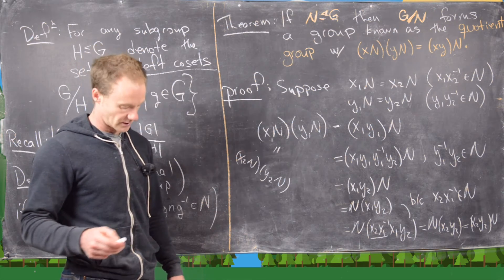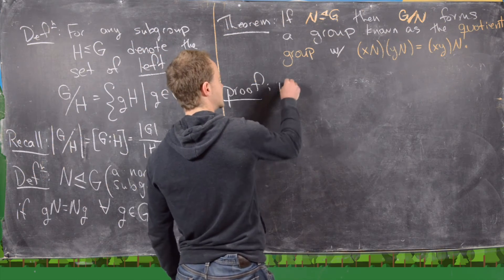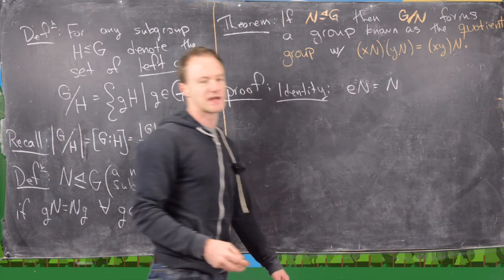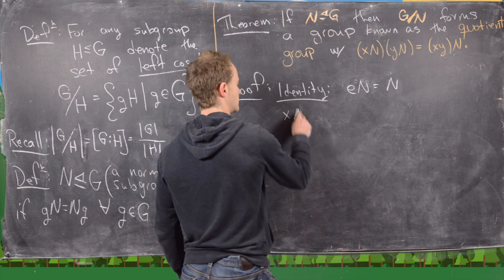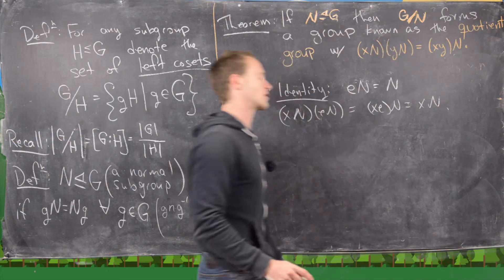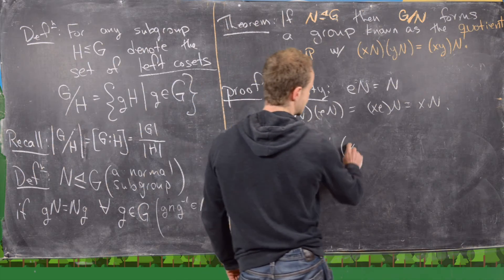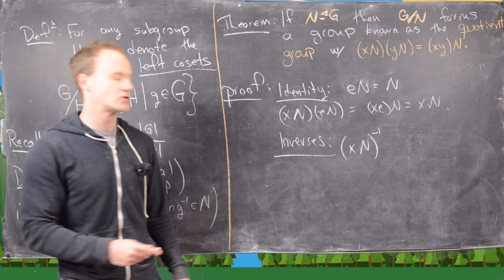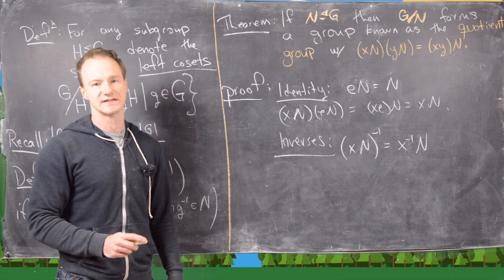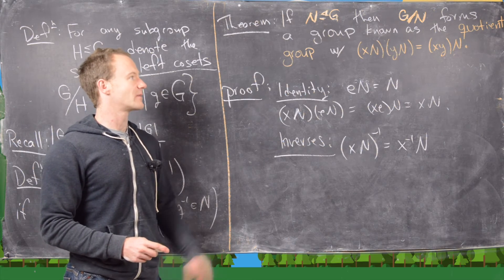Now we check the remaining group axioms. For identity: consider the coset eN, which is just N itself. Then xN times eN equals xeN, which equals xN — so N acts as the identity. For inverses: the inverse of xN in the quotient group is the coset x⁻¹N, formed from the inverse in the actual group. Associativity is easily inherited from the group. I won't check those last two explicitly.